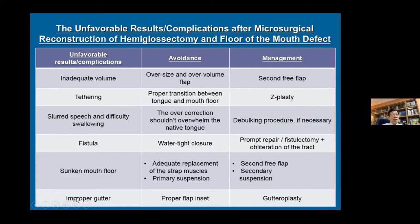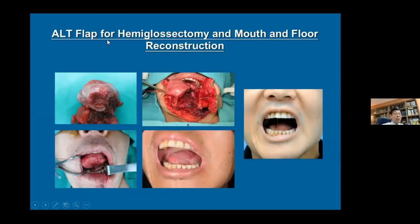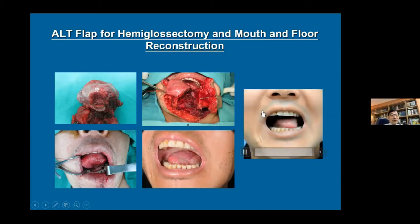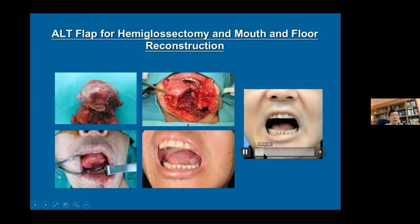There is a list of unfavorable results following hemiglosectomy and floor of mouth reconstruction, including inadequate volume, tethering, slurring speech, difficulty swallowing, fistula, and a sunken appearance. These unfavorable results can be avoided by paying careful attention to each factor. In case they occur, options include a second free flap, Z-plasty, or other approaches. With proper attention, the patient achieves quite acceptable speech and no eating problems.